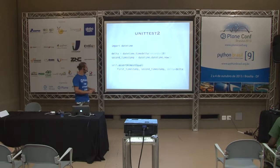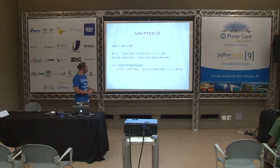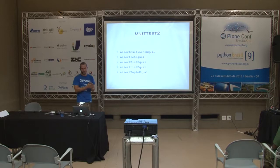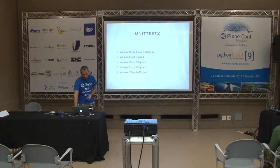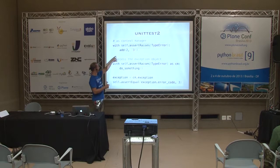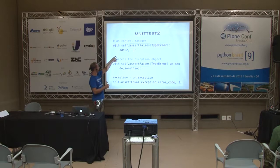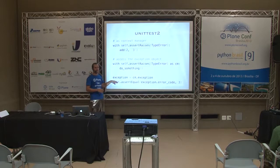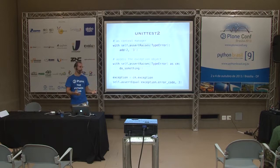assertAlmostEqual is also very useful. assertMultiLineEqual uses diff-lib and is really helpful for comparing large, possibly Unicode strings — it gives you nice diffs where the changes are tremendously helpful when debugging. One of my favorites: assertRaises can now be used as a context manager. You can do 'with self.assertRaises(TypeError)' and then call whatever you need. You can also save the context manager and at the end see what the exception was and what the exception code was — to really nicely assert what exceptions are raised and whether you catch or raise them correctly.